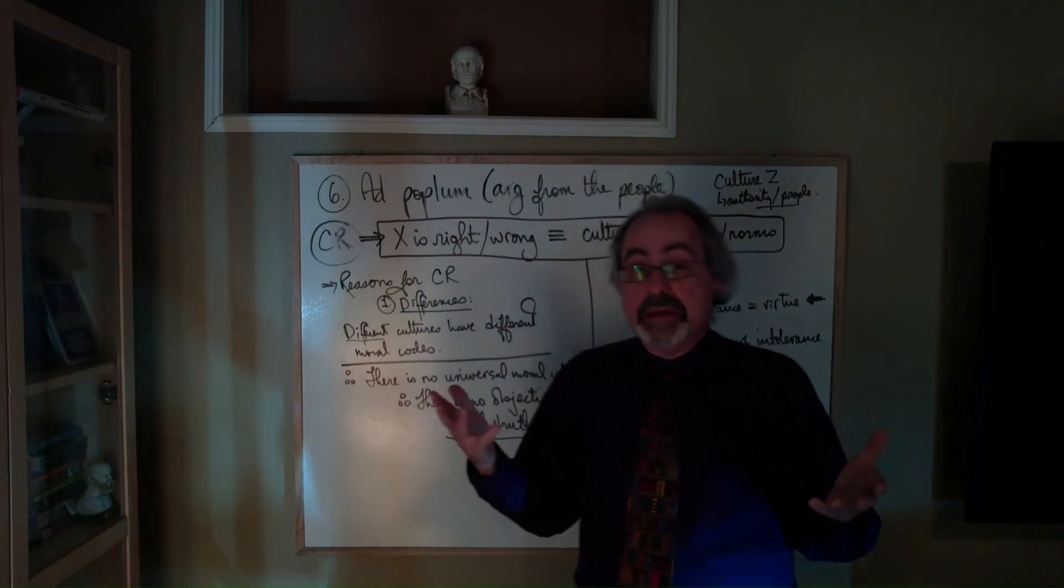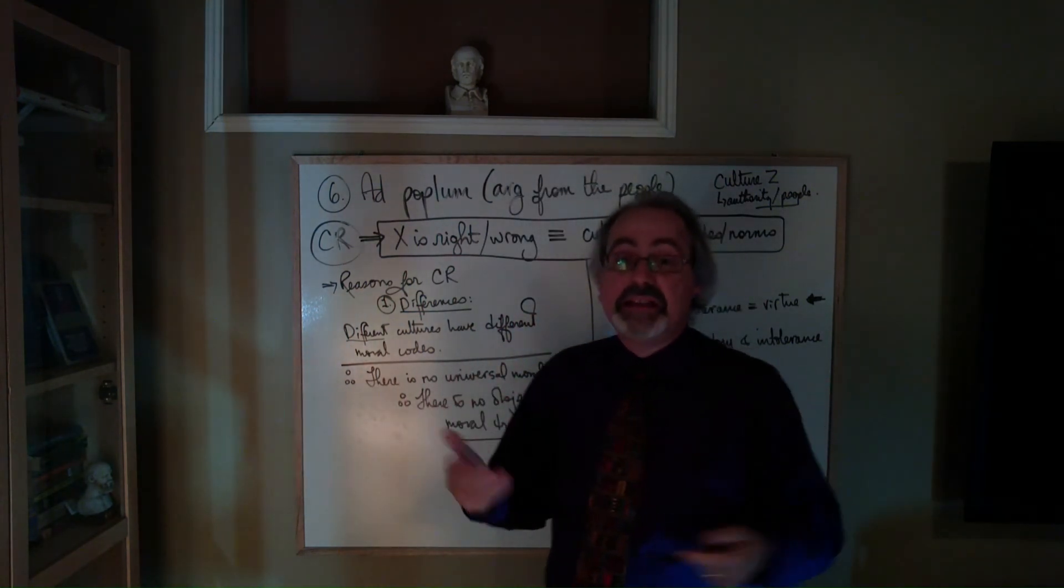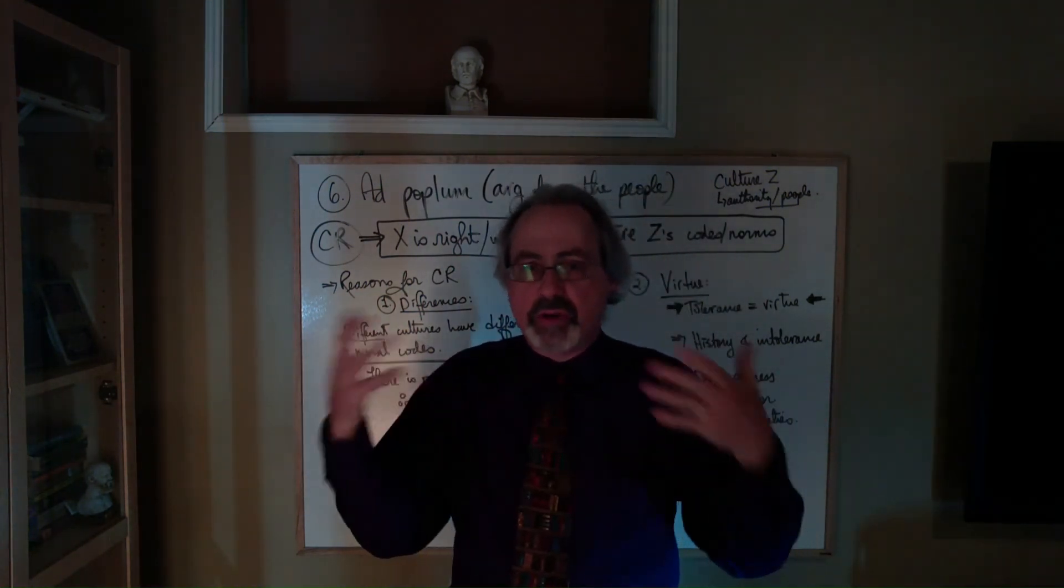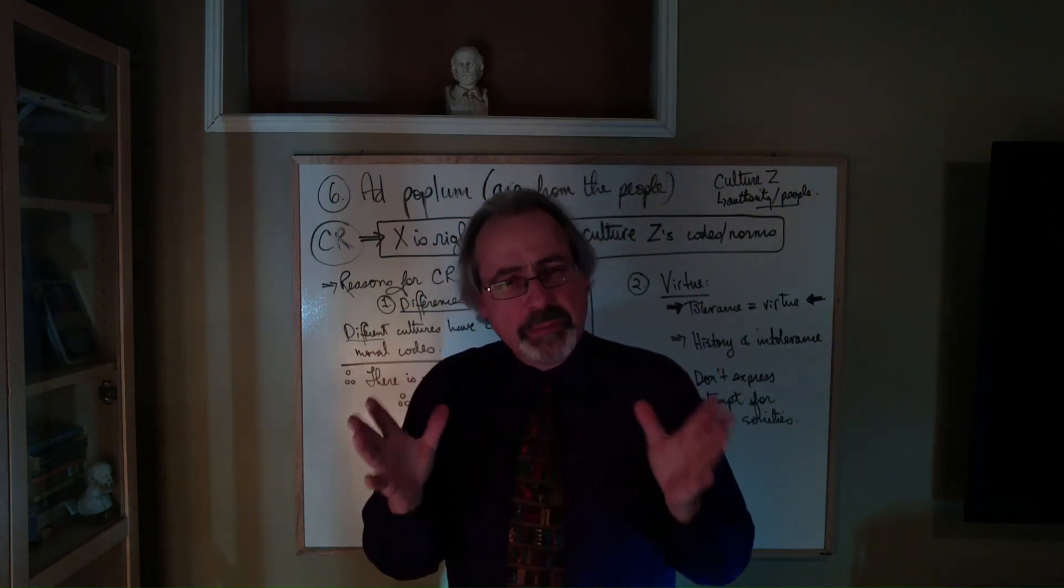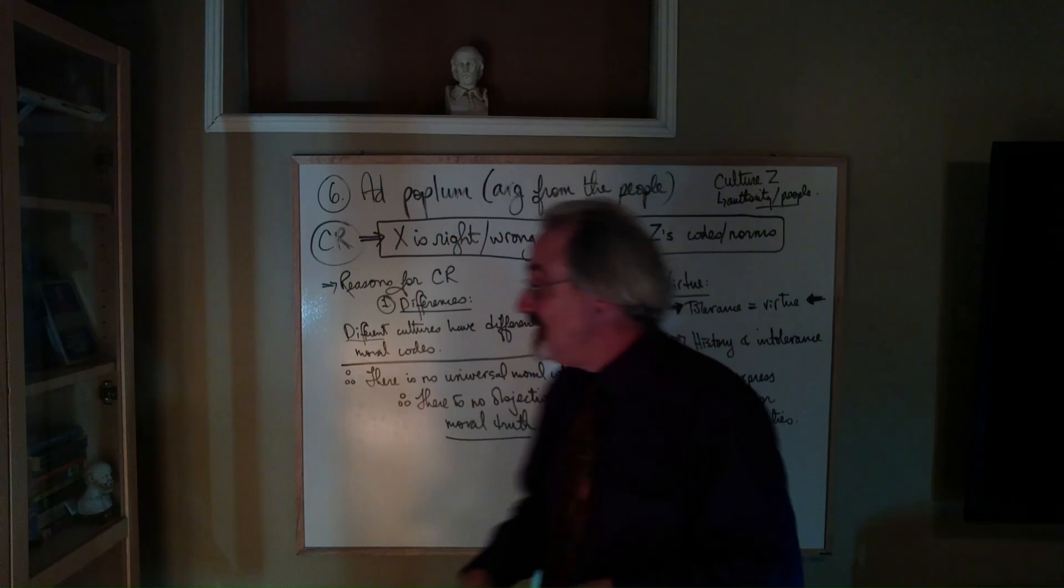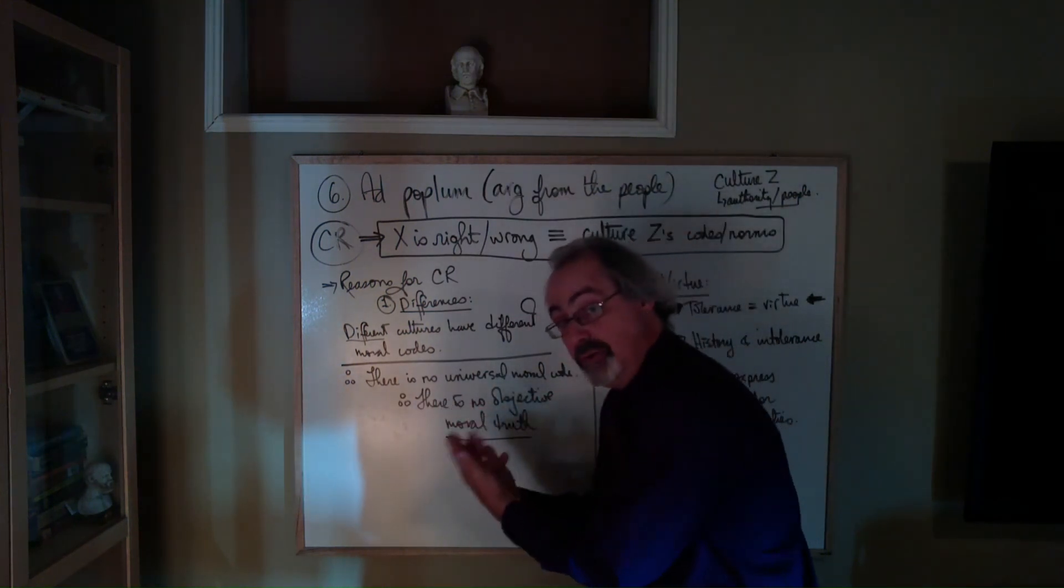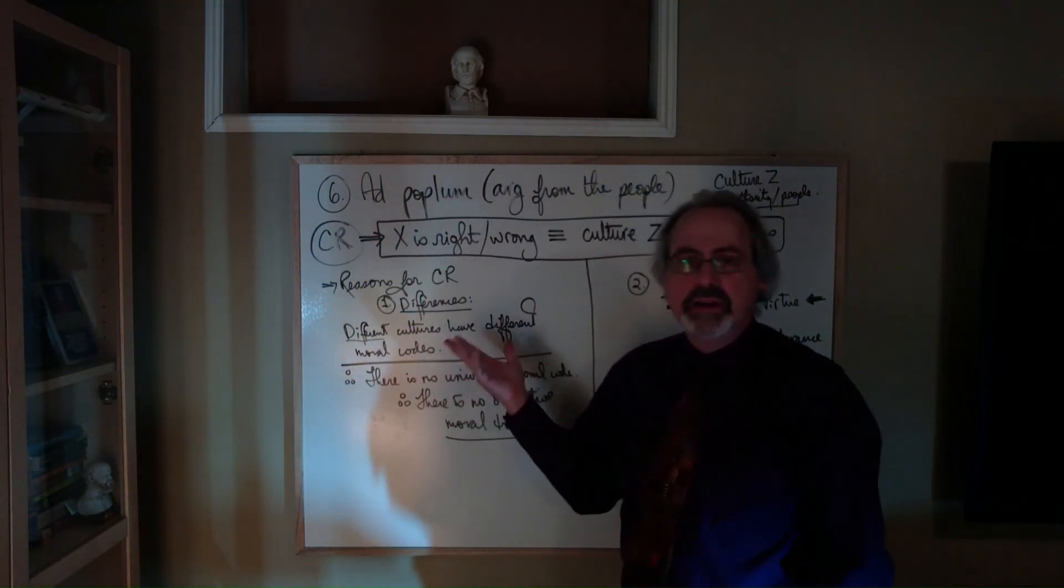But why did they practice infanticide? Well, they had maybe a rougher kind of existence that they had, or some other kinds of environmental conditions. So some people say that even the differences in the underlying value that the code expresses, they could be actually quite minor.